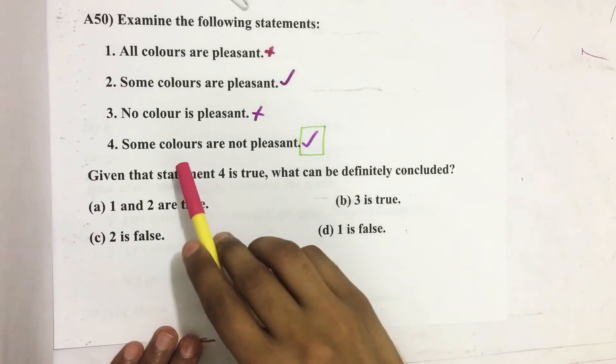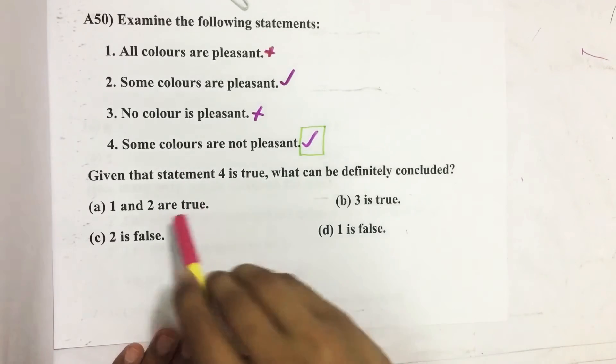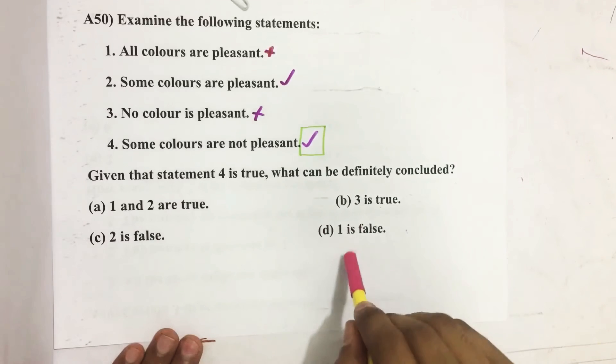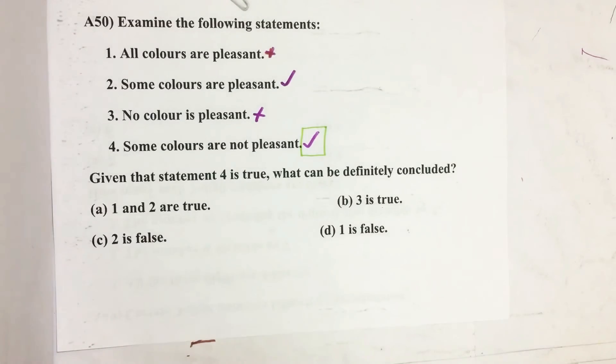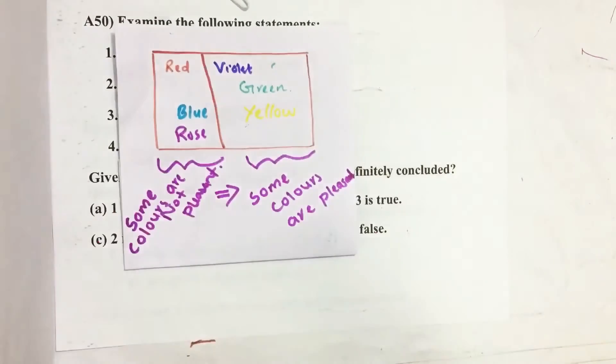So here, given that the fourth statement is true, that is some colors are not pleasant, then from the given four options, which one can be definitely concluded?